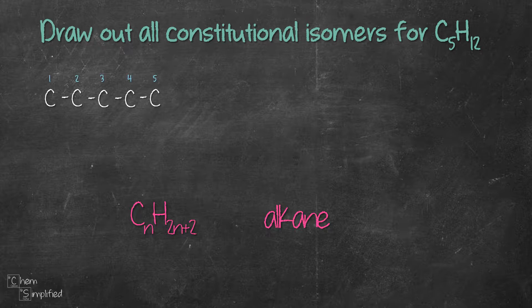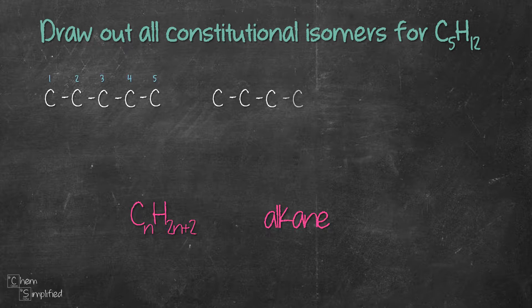Now if we were to draw 4 carbons and then we stick a carbon at the end like this, is it an isomer? Well let's see. We can count the carbon chain and it looks like it's 5 carbons connected straight in a chain.